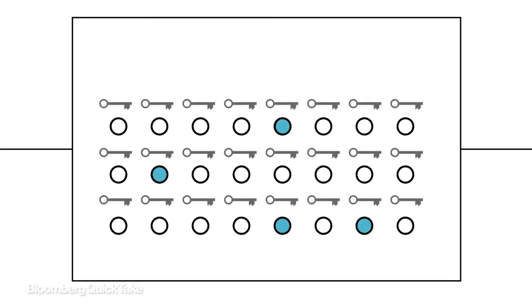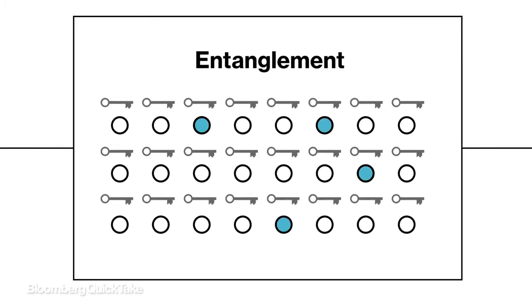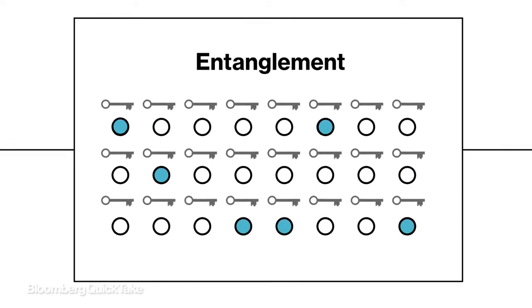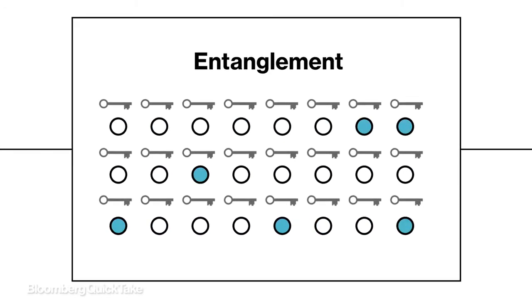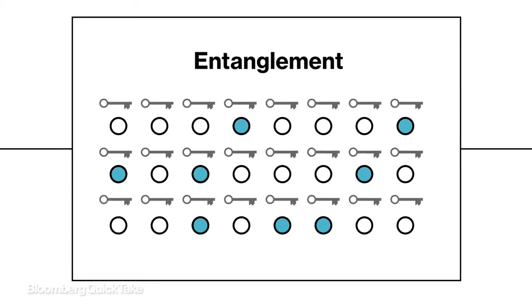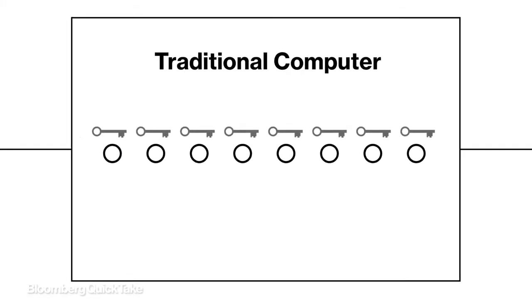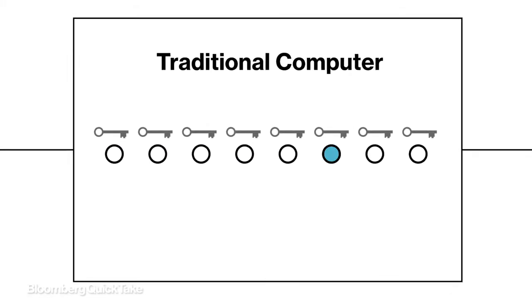Qubits can also exhibit what's called entanglement, a state in which a change to one changes the state of another. These two properties let quantum computers consider multiple possibilities at once, while a normal computer plugs away at one possible answer at a time.